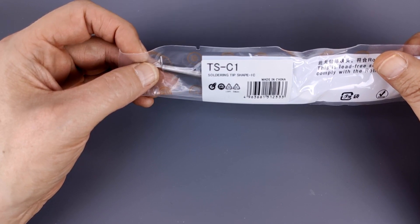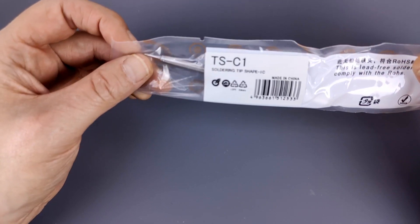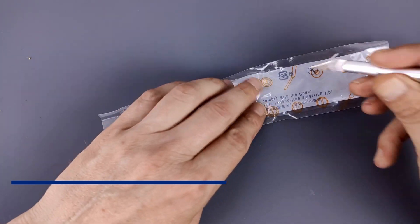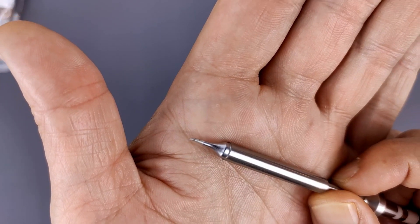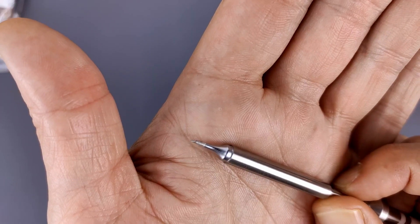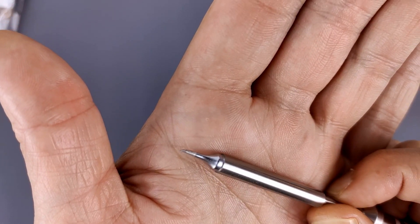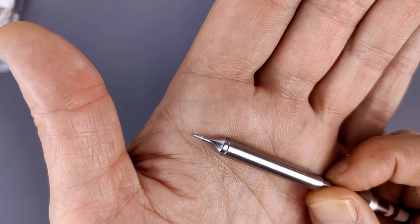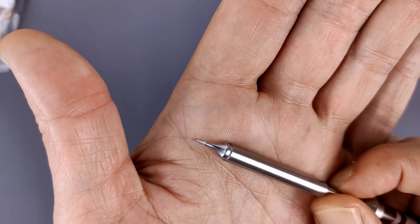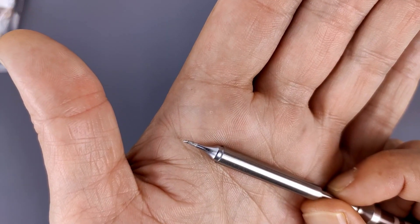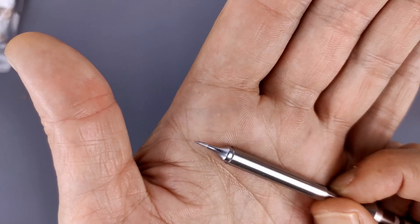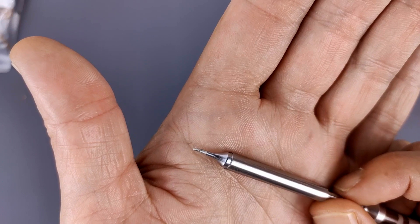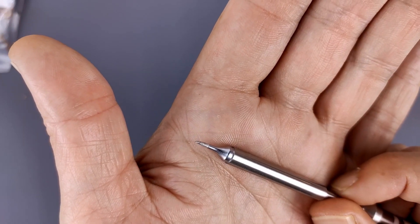Oh wait, it says TS-C1 soldering tip shape 1C. Anyway, it's a TS-100 soldering iron tip. I don't know how well this shows up on camera but it is a 0.1 millimeter tip with a tangent tip. I have the 0.2 millimeter conical tip but that is sometimes a pain to use for soldering so I thought I would give this one a try.